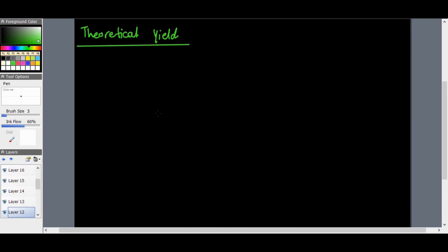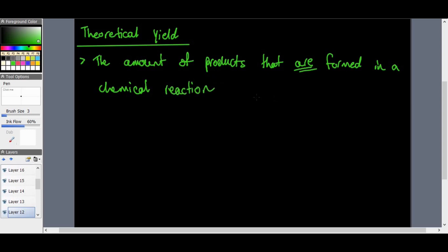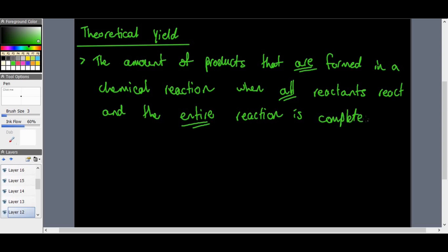The last topic of stoichiometry that we need to go to is theoretical yield. Now, just to define theoretical yield, it is the amount of products that are formed in a chemical reaction when all reactants react. In other words, there's none wasted, and the entire reaction is complete. That's theoretical yield.